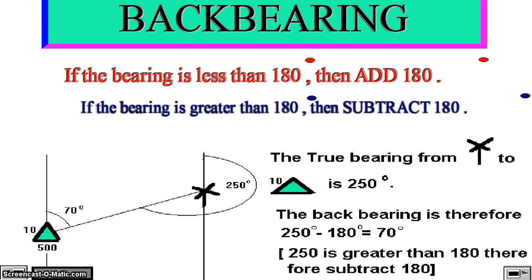In order to calculate the back bearing, if the bearing is greater than 180 degrees, then subtract 180 degrees. For example, 200 degrees is greater than 180 degrees. Therefore, the back bearing of 200 degrees will be 200 degrees minus 180 degrees, which will be equal to 20 degrees.